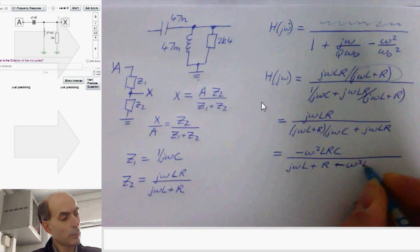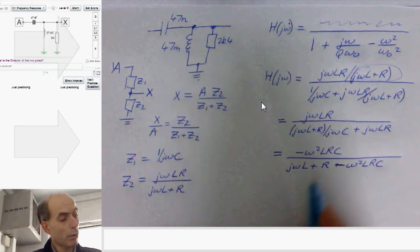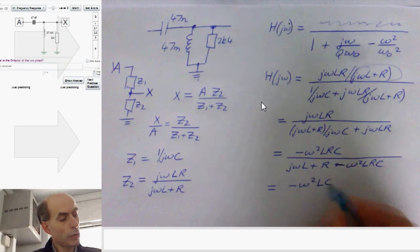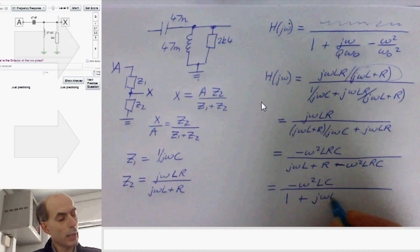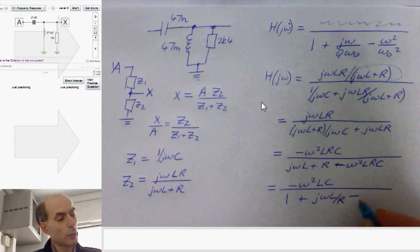Now, if I divide top and bottom by R, that would give me minus ω² LRC divided by, the R would just become a 1, the jωL would become jωL over R, and the ω² LRC term would become minus ω² LC.